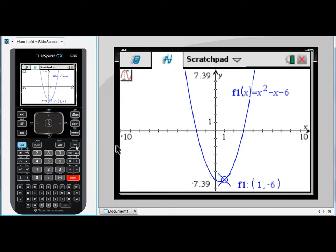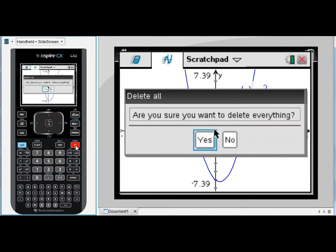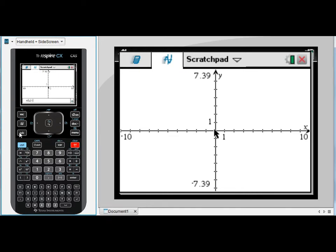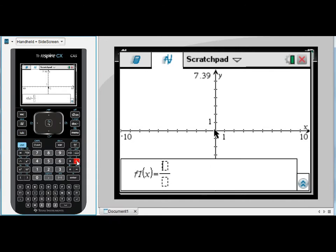I want to look at a different type of function, so I'm going to delete all this, pressing delete three times. Tab to open the entry line again. I'm going to enter a hyperbola using control divide to bring up the fraction template. I'm going to look at 1 over x minus 3.